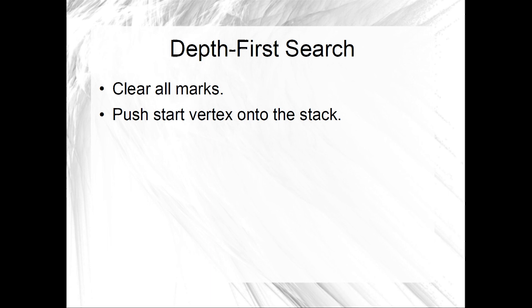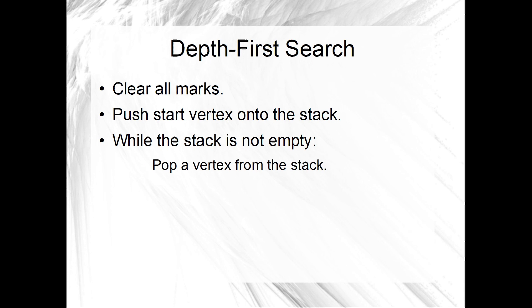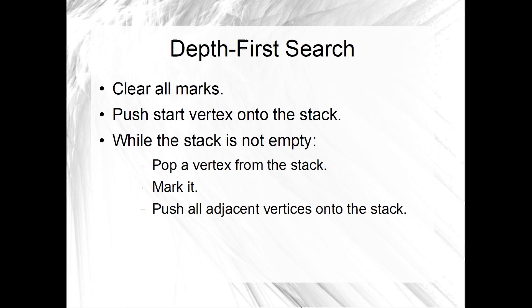After the initial part of the algorithm is completed, the second general part is a loop. The body of the loop will repeat so long as the stack is not empty. While the stack is not empty, the loop begins by popping a vertex from the stack and then marking it, and then pushing all adjacent unmarked vertices onto the stack. It is this marking of vertices which ensures the algorithm does not end up in an infinite loop.